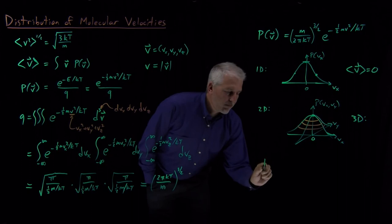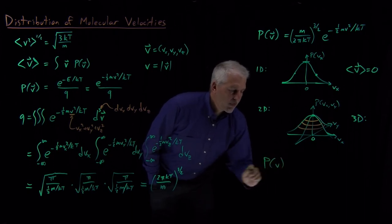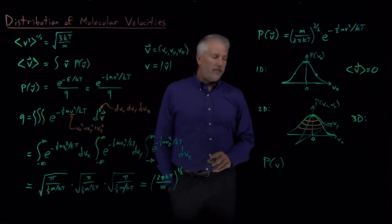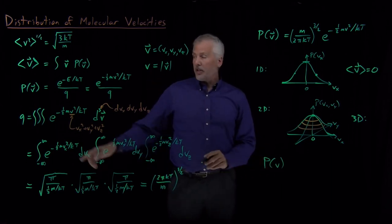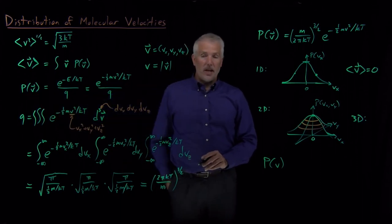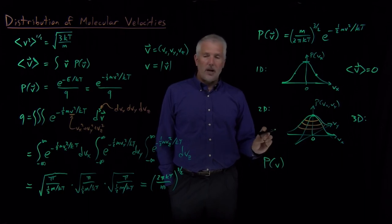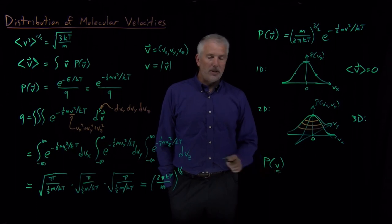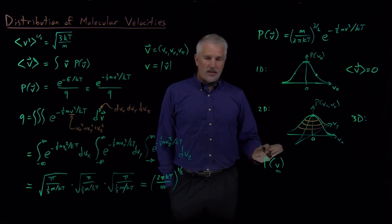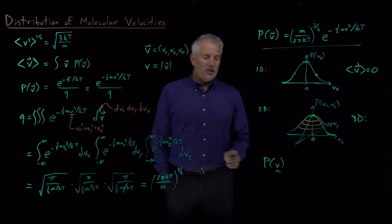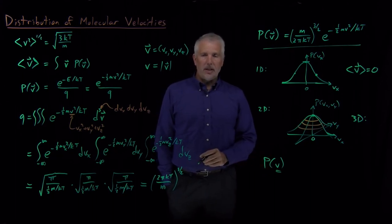The question we should have been asking all along is: what's the probability of having a particular molecular speed — the magnitude of the velocity vector? We've now calculated the distribution of molecular velocities, which is important, but to get an intuitive sense of how quickly molecules are moving, we need the distribution of speeds rather than velocities. The next step is to convert this velocity distribution into a distribution of molecular speeds.